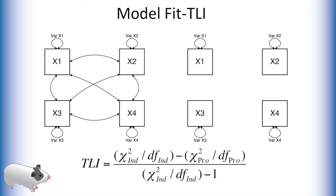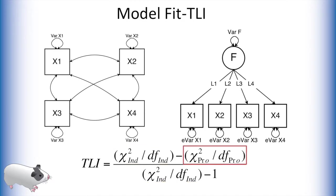TLI is another fit index that is calculated very similarly to CFI. Here, instead of subtracting degrees of freedom from the chi-square test between the saturated and independence model, we divide. We do the same with the chi-square test between our proposed factor model and the saturated model. Notice that if this ratio is 1, then the TLI is also 1, because the denominator has a negative one here. Thus, if the test of our factor model versus the saturated model has as many chi-square points as degrees of freedom, then TLI shows a good fit, even for significant chi-square values. However, the larger the chi-square value relative to the degrees of freedom, the closer TLI gets to zero, indicating a poor fit. As with CFI, TLI values greater than 0.9 are considered adequate fit.